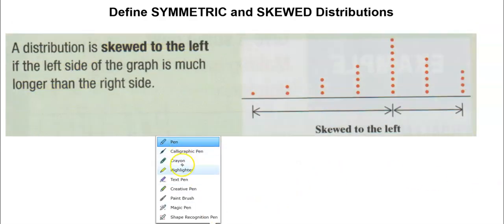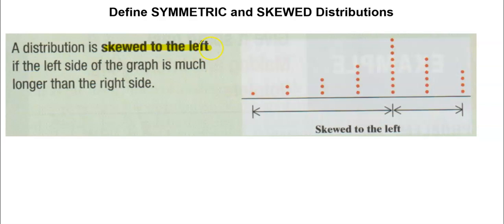That is right skewed. Right skewed tells us where the data tapers off. Left skewed—skewed to the left—the left side of the graph is much longer than the right side of the graph. So that says the tail is on the left.